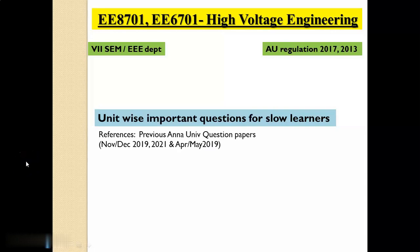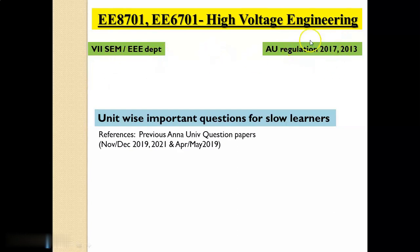Good evening to all. This lecture covers High Voltage Engineering, a subject for 7th semester EEE students. In Anna University Regulation 2017, the subject code is EEE8701. In the 2013 Regulation, the subject code is EEE6701. There is no major change in the syllabus — both are looking common.